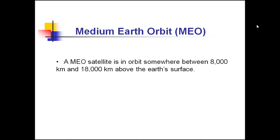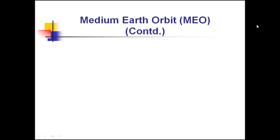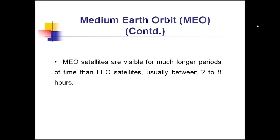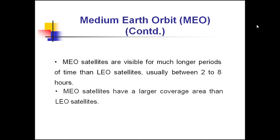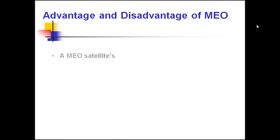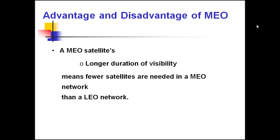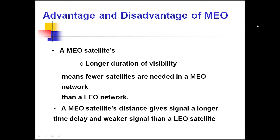MEO satellites — medium Earth orbit satellites — are lifted at a height between 8,000 km to 18,000 km above the Earth's surface. MEO satellites are similar to LEO satellites in functionality. MEO satellites are visible for longer periods than LEO satellites, typically 2 to 8 hours, and have a larger coverage area. Fewer satellites are required compared with a LEO network. However, MEO satellite distance results in a longer time delay and weaker signal than LEO satellites.